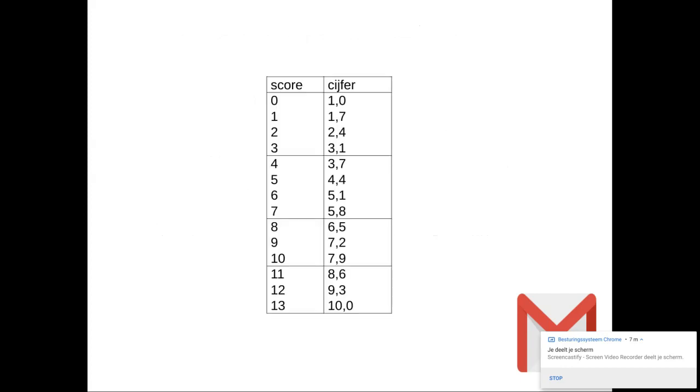And then you have 13 points. And you will score a 10. If you have a 10, you get a 7.9. If you have 13 points, you get a 10. If you have one point for conventions, two points for content elements, and one point for effective communication, you already have four points. That's a 3.7. Suppose you score four points for language, then you have eight points, and you immediately see that you can score a 6.5 easily. As long as you do what I ask you to do.